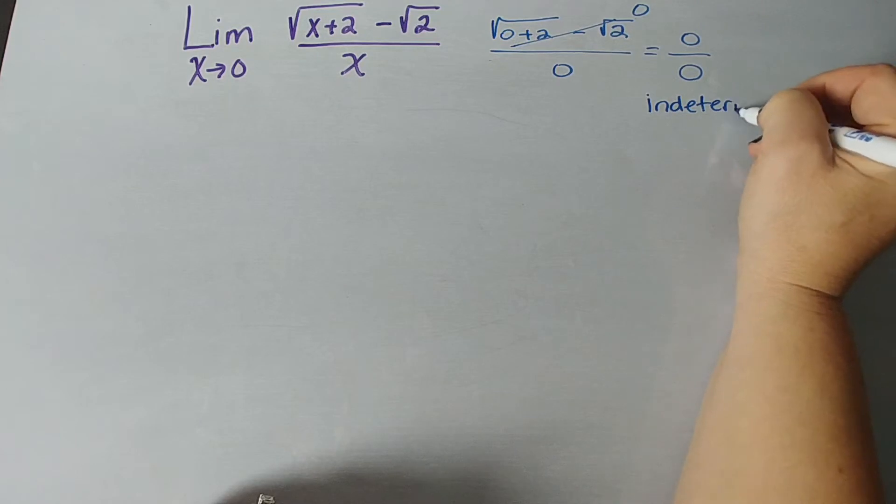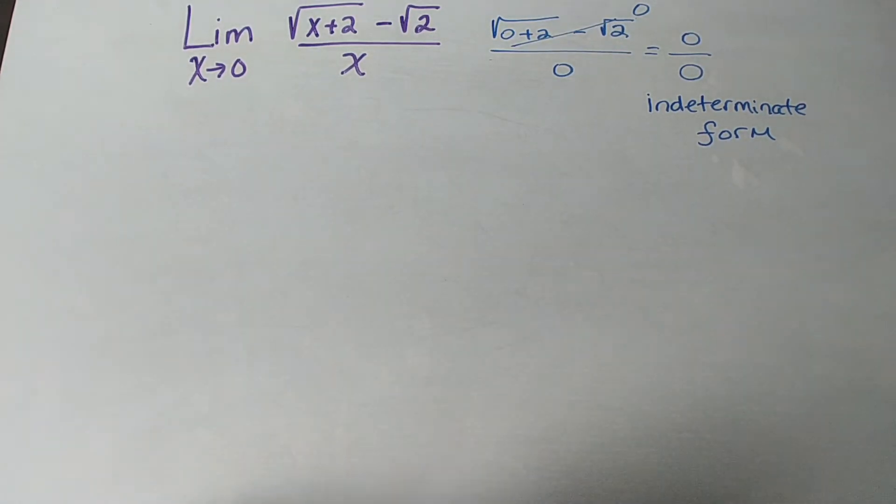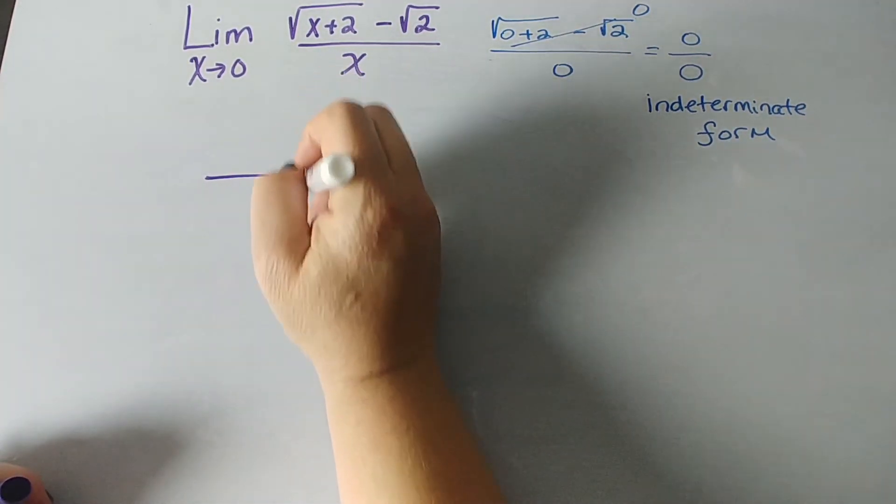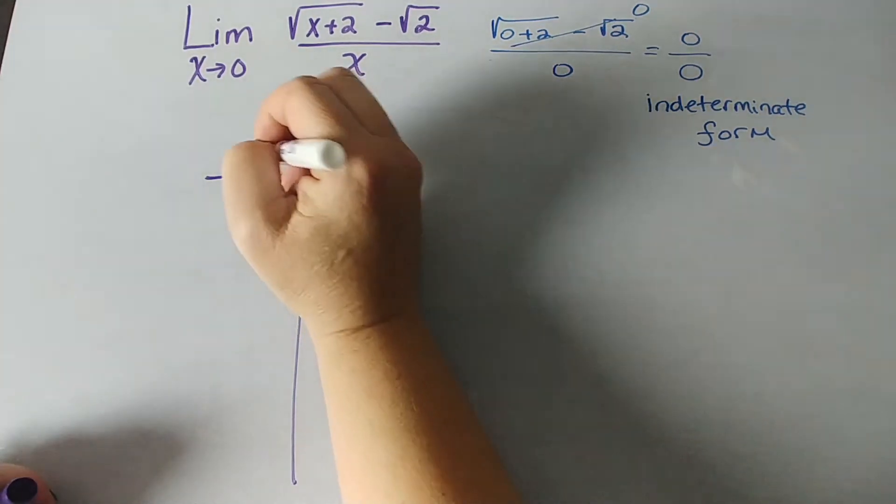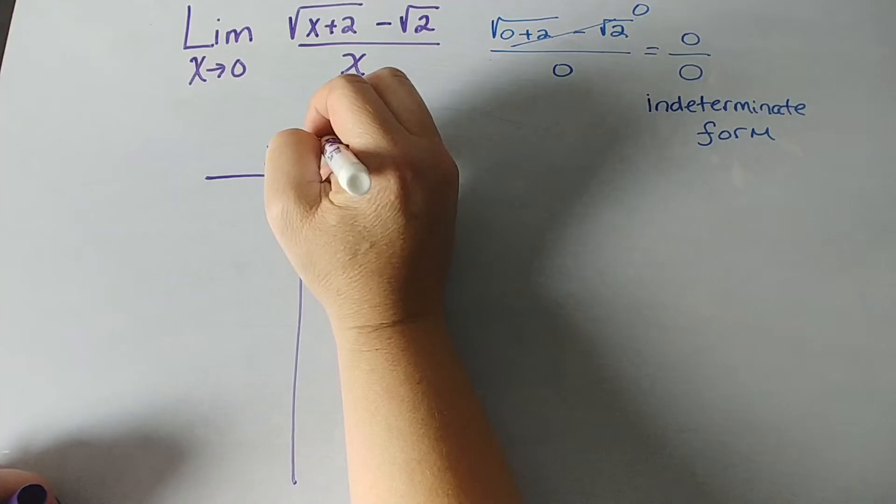I'm sure you're getting tired of hearing this by now. Indeterminate form, which means we can't really tell what's happening or if the limit exists. So, the first thing they usually ask you to do is to make a table to estimate values. Worst thing about making a table is that you have to make a table, and that it takes forever.